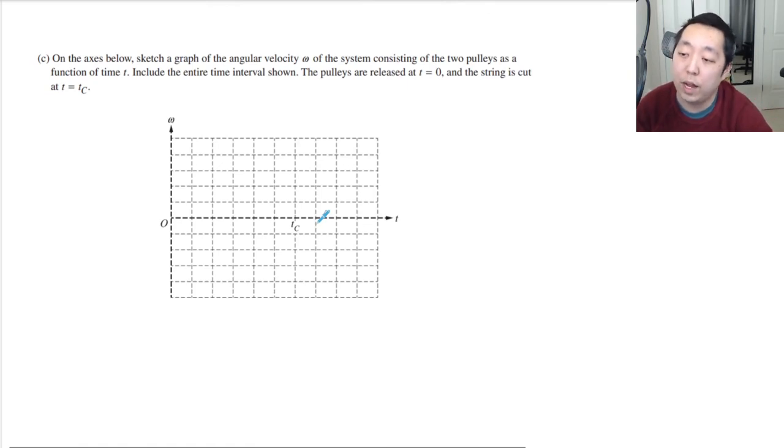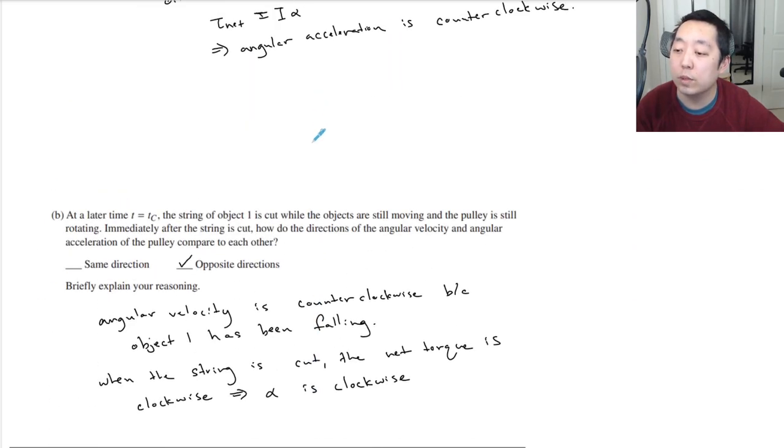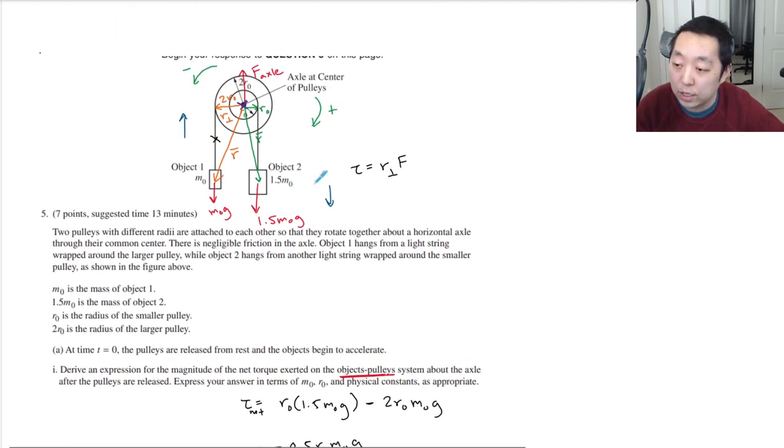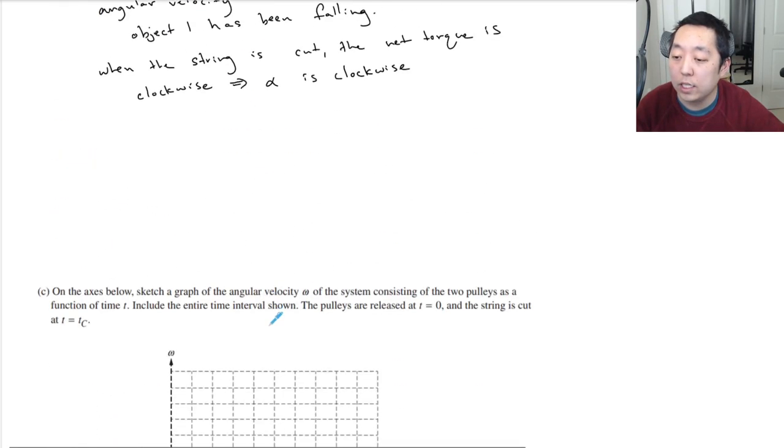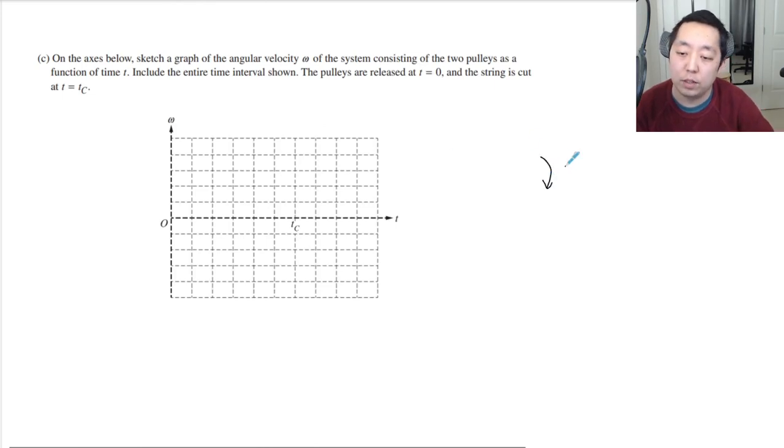On the axis below, sketch a graph of the angular velocity omega of the system. The two pulleys at the function of time t include the entire time interval shown. The pulleys are released at t0, and the string is cut at tc. So, initially, it's feeling a positive... It doesn't matter which way you say is positive, I guess. Did they say which one they want as the positive direction? I'm going to double-check this, I don't want to make a mistake on here. Okay, let's say counterclockwise is... Let's say clockwise was positive, and counterclockwise was negative. Let's just go with our negative one. So, we thought it would go with negative angular velocity, so it started going downward.